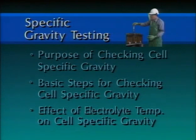This part of the program will look at specific gravity testing of substation battery cells. The key points that will be addressed include the purpose of checking cell specific gravity, the basic steps for checking cell specific gravity, and the effect of electrolyte temperature on the specific gravity of a cell.